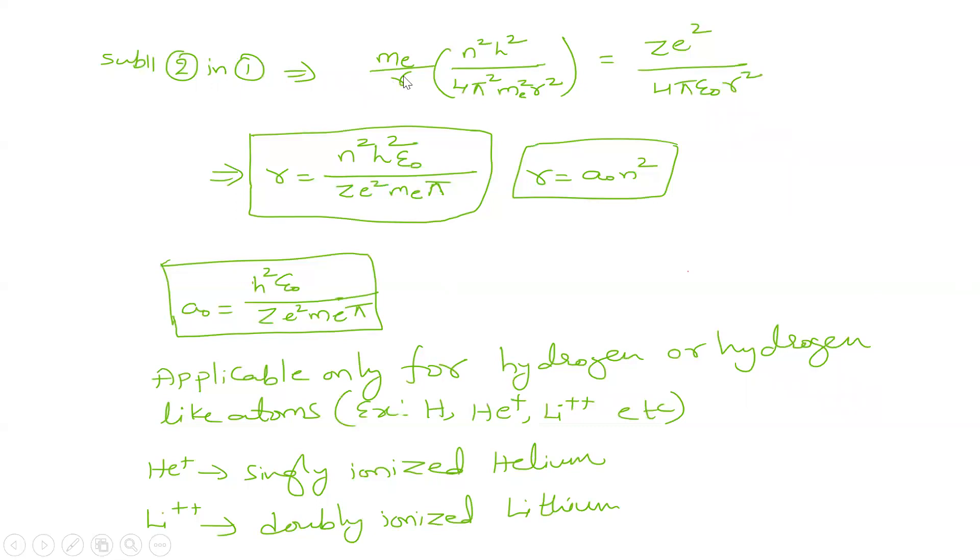We are going to get Me by R times N²H² by 4π²Me²R², which is equal to this electrostatic force. So from this we are going to calculate the value of R.